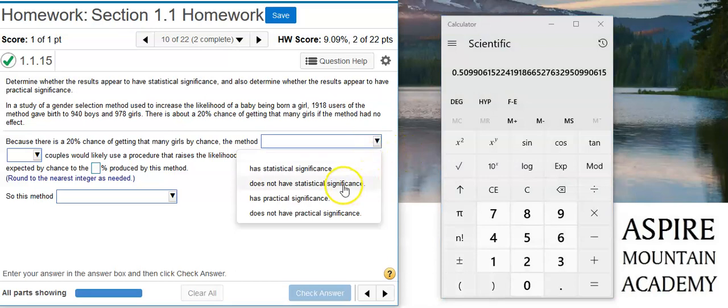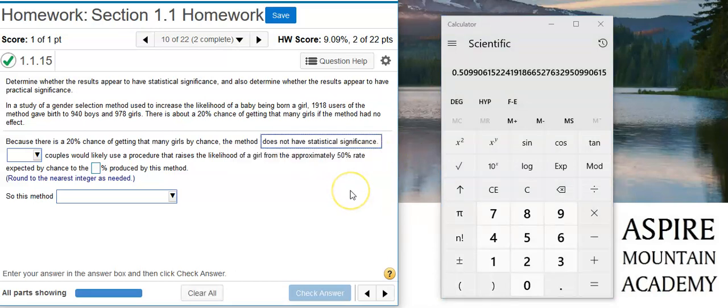So we would say that this does not have much statistical significance because the 20% chance of getting that randomly is actually fairly low. If this number were greater than 50%, then we would probably say that it does have statistical significance. But here, 20% relatively low, so we're going to say it doesn't have statistical significance.